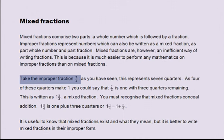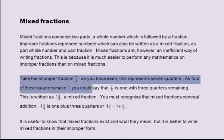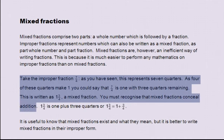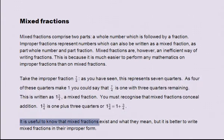Take the improper fraction seven divided by four. As you have seen, this represents seven quarters. As four of these quarters make one, you could say that seven quarters is one with three quarters remaining. This is written as one and three quarters — a mixed fraction. You must recognise that mixed fractions conceal addition: one and three quarters is one plus three quarters. It is useful to know that mixed fractions exist and what they mean, but it is better to write mixed fractions in their improper form.